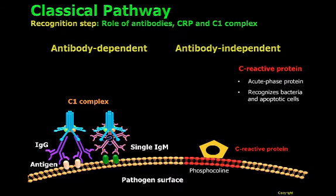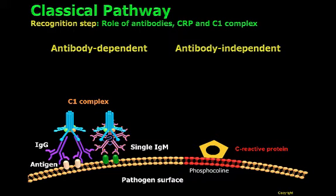CRP recognizes phosphocholine present on the surface of bacteria and also on the surface of apoptotic cells. CRP is also considered to be an opsonin, which means that CRP will tag pathogens for destruction by a process called phagocytosis. When CRP is bound to the cell surface, the C1Q complex can also recognize it.